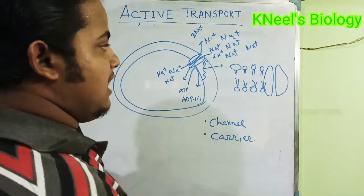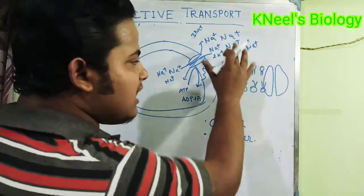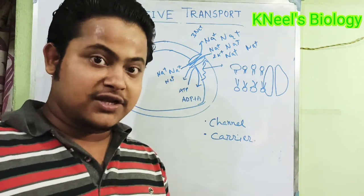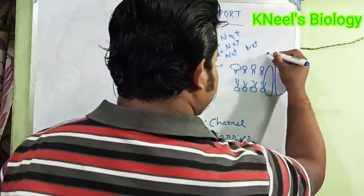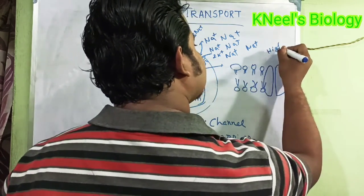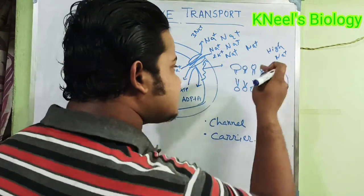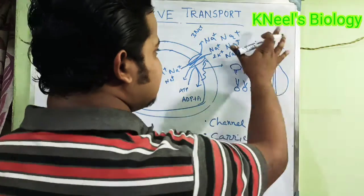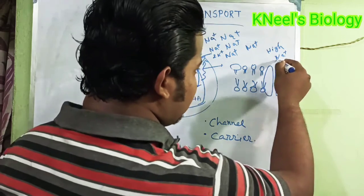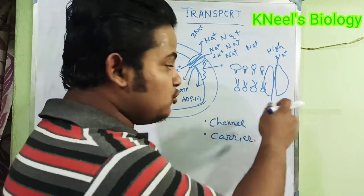This is known as the primary active transport. But there is another transport. When the concentration of sodium ions is too high in the extracellular environment, what happens? The extracellular sodium is too high, and this sodium, due to its steep gradient, wants to move back into the cell.